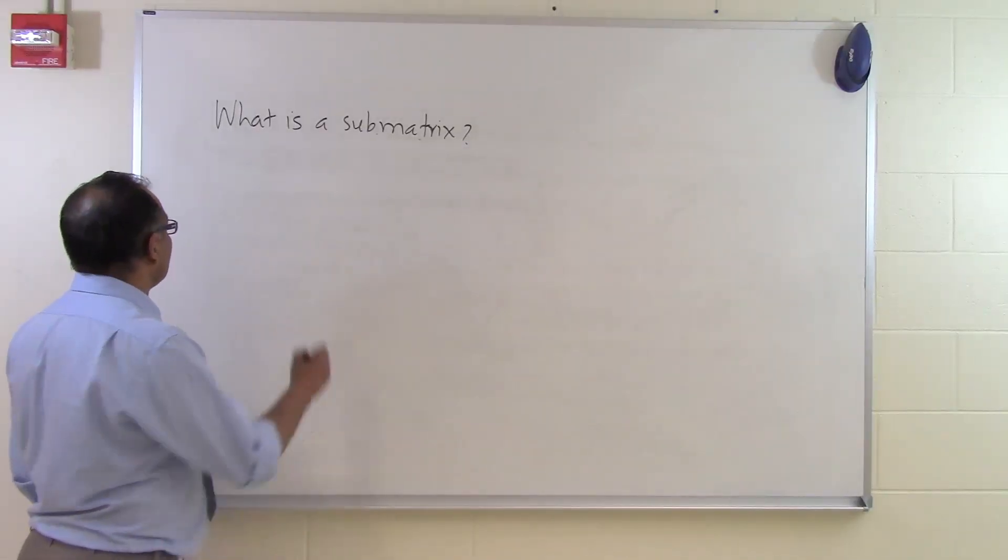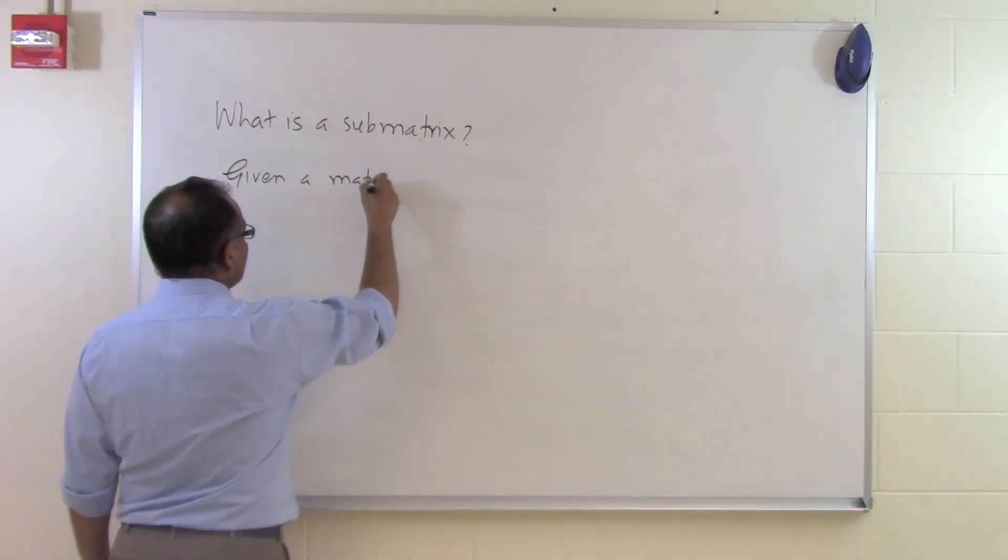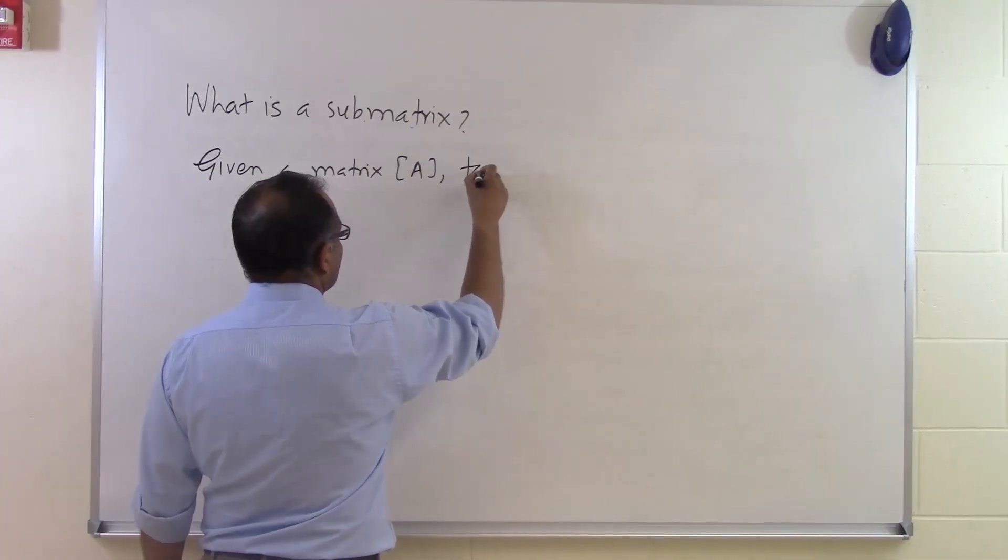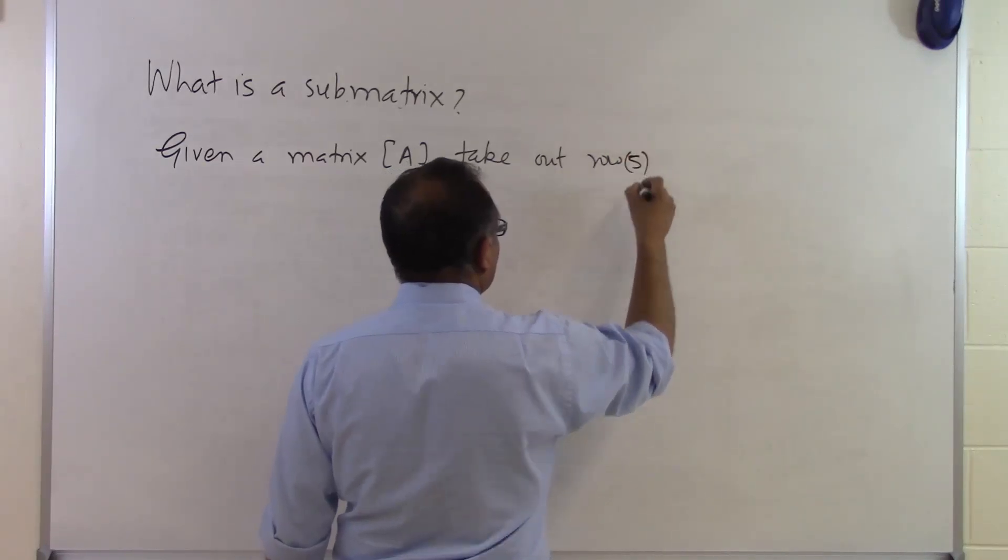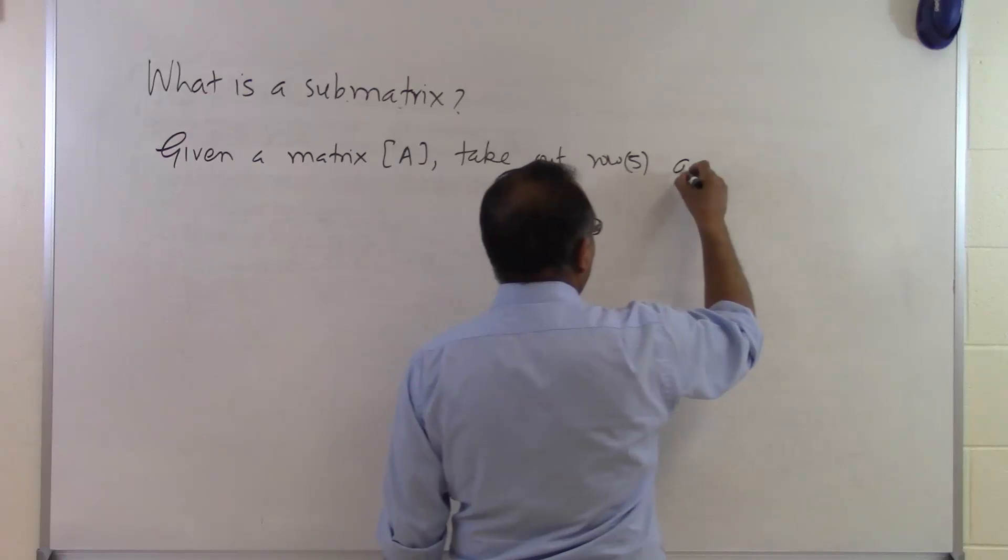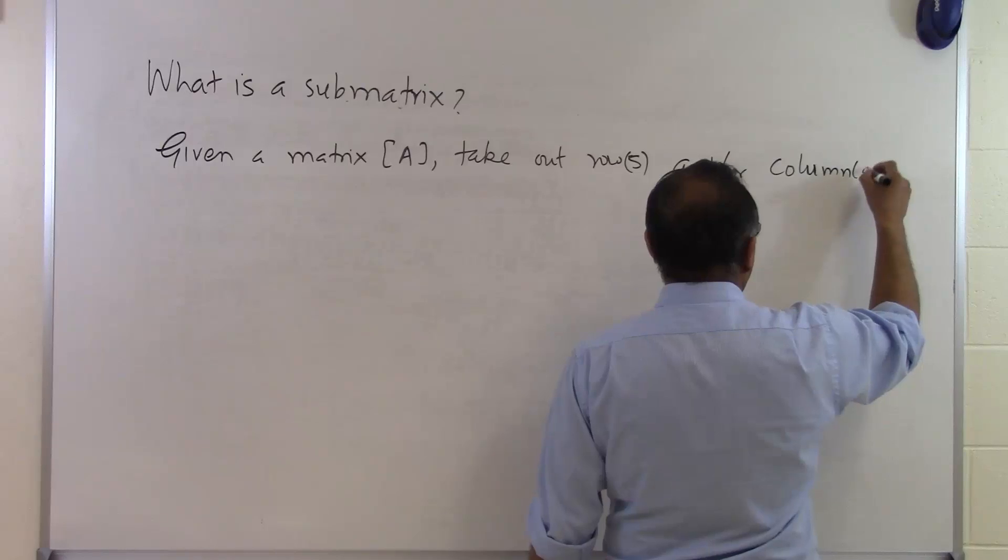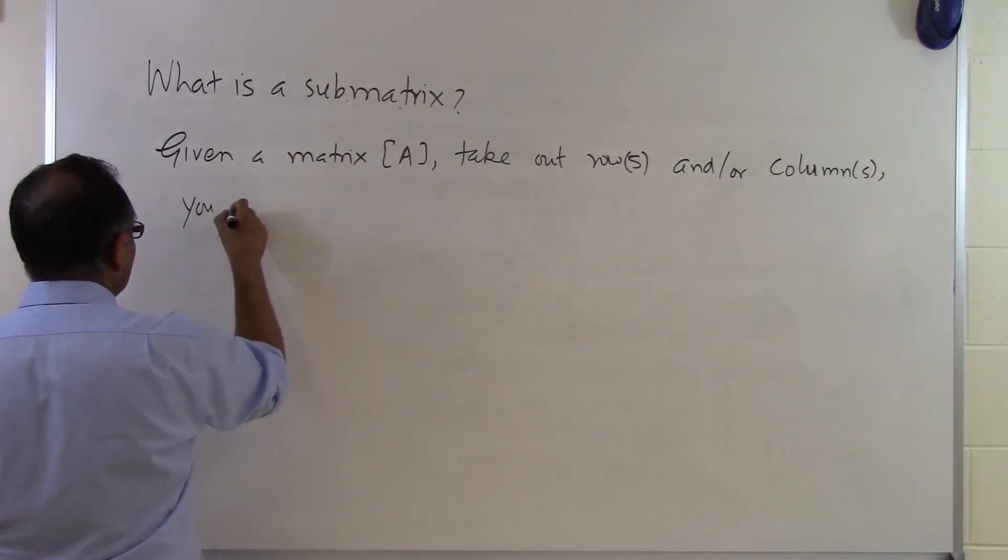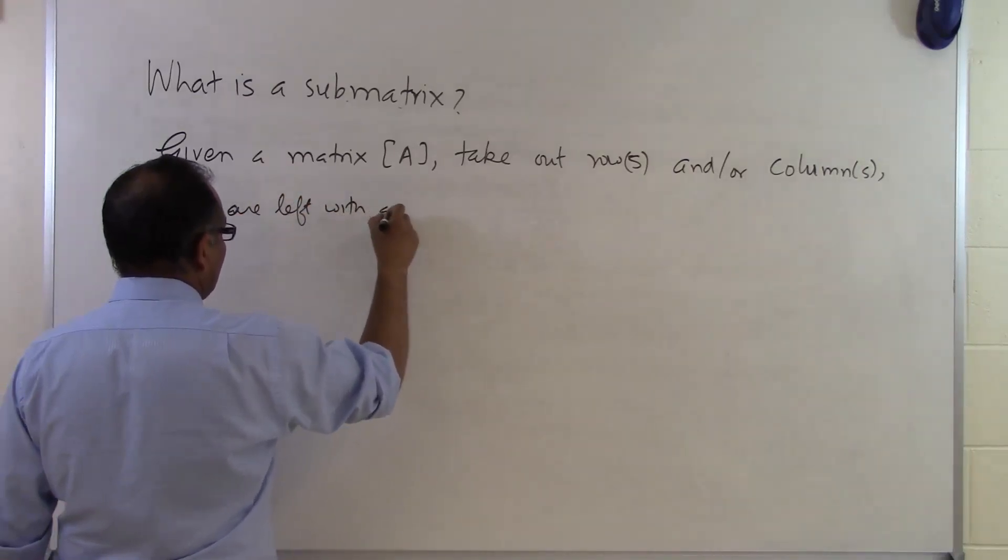In this segment we will talk about what is a submatrix. So given a matrix A, you take out rows and or columns and you are left with a submatrix.